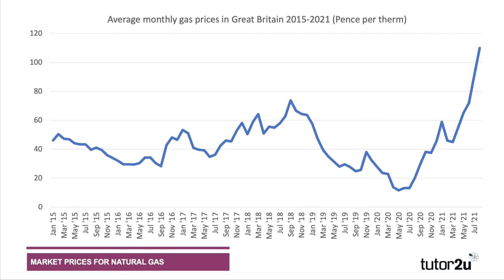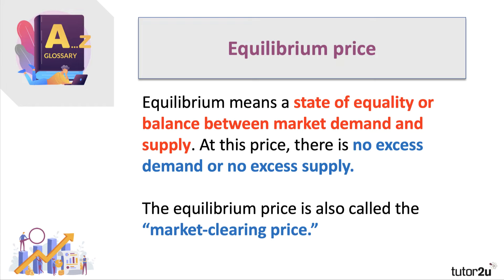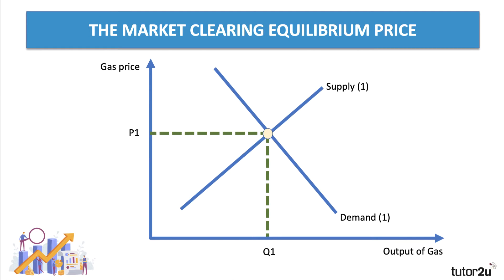What do we mean by the term equilibrium? Equilibrium is a state of balance or equality between market demand and supply. The equilibrium price is where there is no excess supply (a surplus) or excess demand (a shortage) — we sometimes call it the market clearing price. This is shown in a simplified diagram with the price of gas on the y-axis and the quantity bought and sold on the x-axis, giving us an equilibrium at P1, Q1.